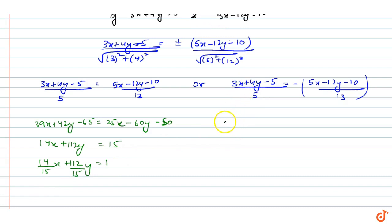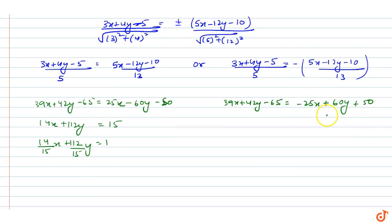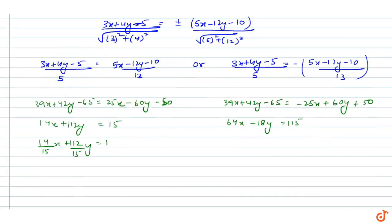Solving the second case: 39x + 52y - 65 = −25x + 60y + 50, which gives 64x + (52 - 42 =) minus 8y = 115, so (64/115)x − (8/115)y = 1.